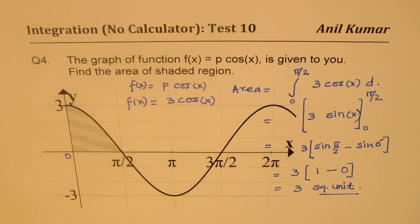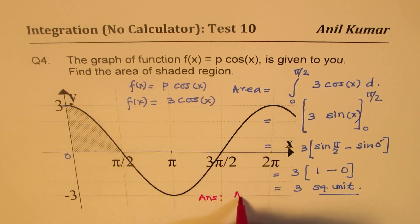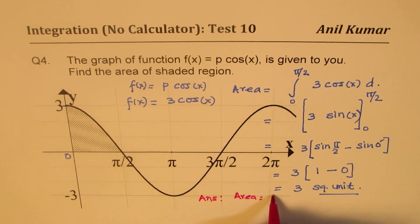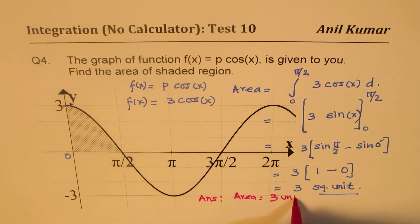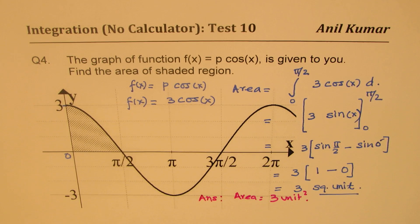So the answer here is that the area equals 3 unit square. That is how you could solve it.